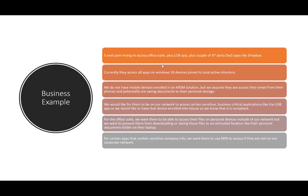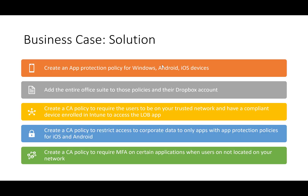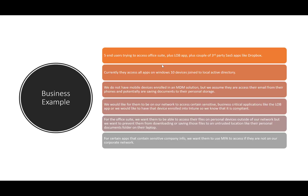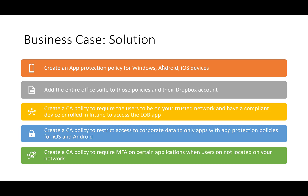Looking back at our business case with five end users accessing the Office Suite plus a LOB app: we can create an app protection policy for Windows, Android, and iOS, adding the entire Office Suite and Dropbox to the policies so users can't cut, copy, paste out of these apps or save to untrusted locations like their personal OneDrive. For the lack of a mobile device policy, we create a conditional access policy to restrict corporate data to only apps with app protection policies applied.